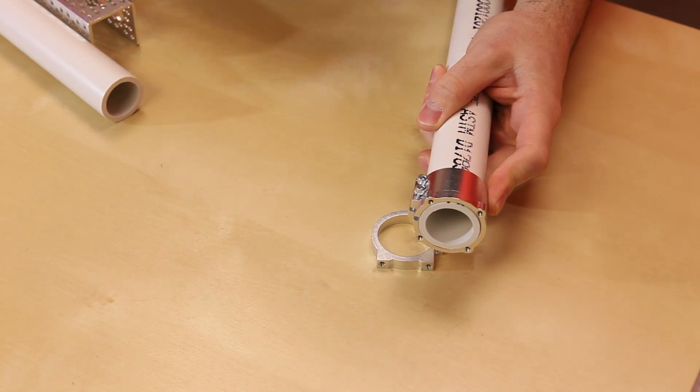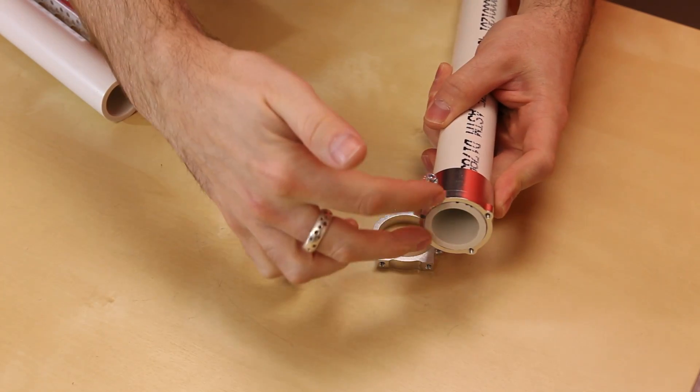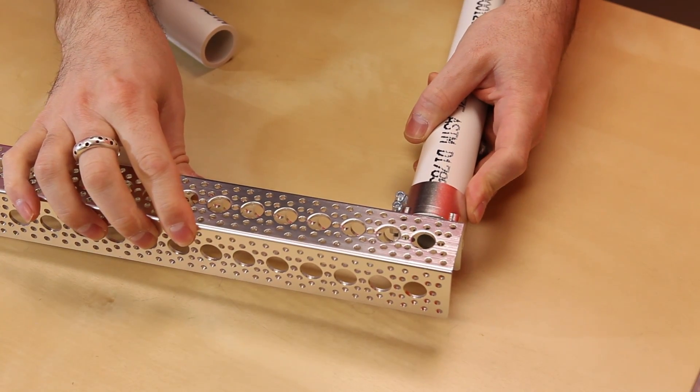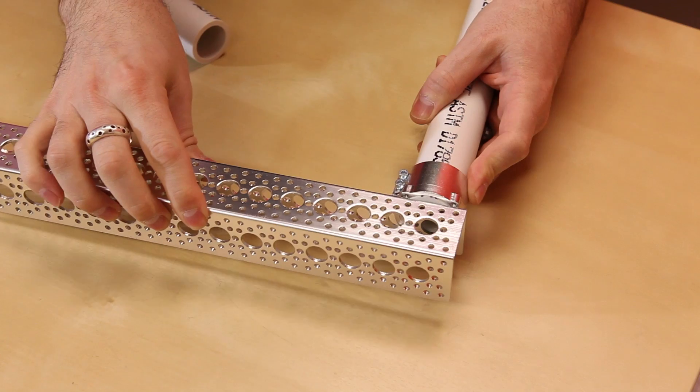This is made to go on the end of the pipe like this and allows you to use PVC pipe as a structural element for whatever it is you're building. And because of this 1.5 inch hole pattern you can actually connect directly to the edge of your channel like that.